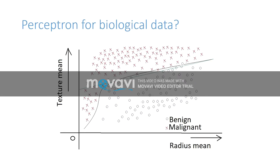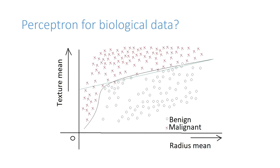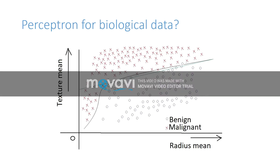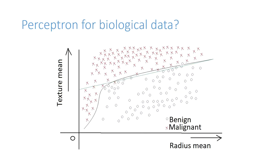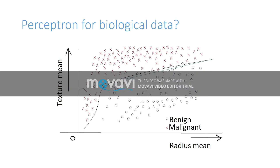This is an example of how a perceptron can be used for classifying data in the case of biological datasets. In this dataset, we have two kinds of data points: benign cancer and malignant cancer. This is a breast cancer dataset. One feature is the radius mean of the breast infected, and another feature is the texture mean of the breast infected. You can see the perceptron has failed to correctly classify some of the data points — the red crosses which are actually the malignant forms of cancer.